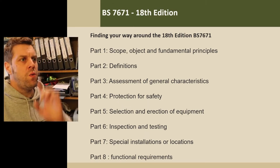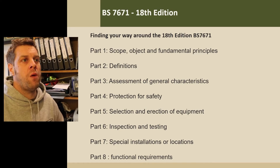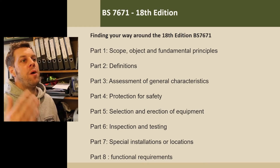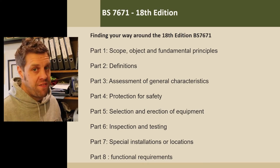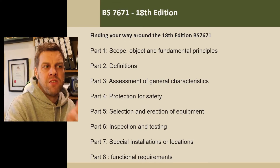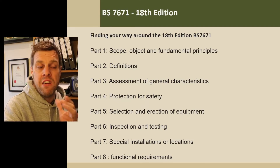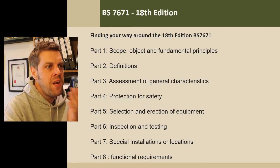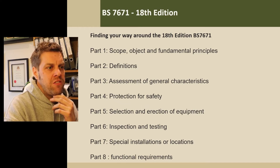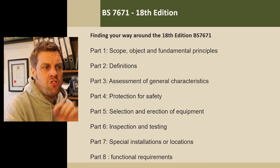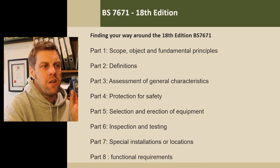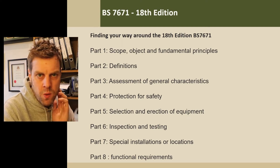So we look at part one: the scope, object and fundamental principles - it's written in legalese. Part two is the definitions, the dictionary. Part three: assessment of general characteristics. Part four: protection for safety. Part five: selection and erection of equipment. Part six: inspection and testing. Part seven: special installations and locations. And part eight, new for this edition: functional requirements.